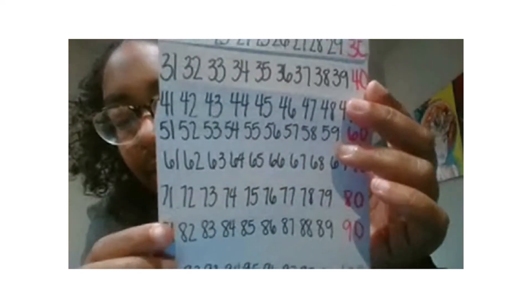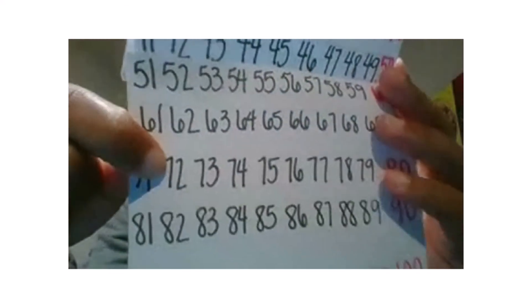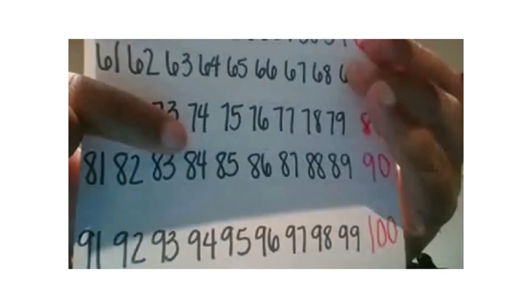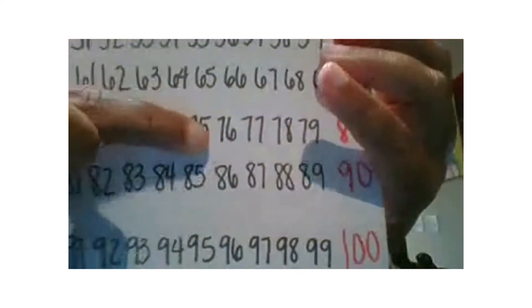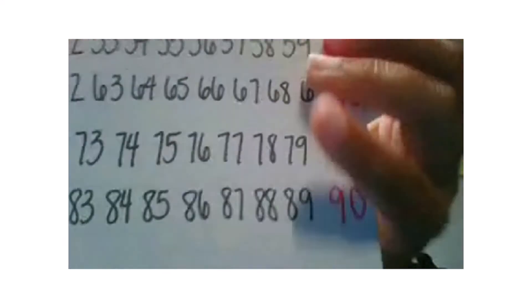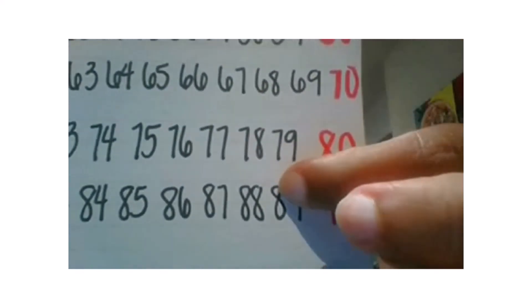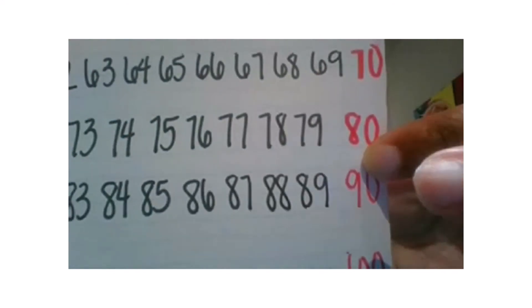Let's go to 71. Seven tens one, seven tens two, seven tens three, seven tens four, seven tens five, seven tens six, seven tens seven, seven tens eight, eight tens. Great job.